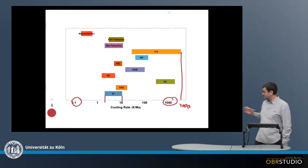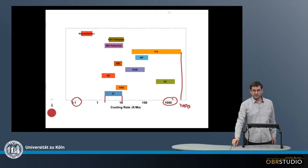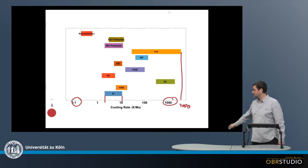This means that iron meteorites with cooling rates of 1,000 or more Kelvin per million years might have cooled down in something like a million years or even less. And this is the range of cooling rates.